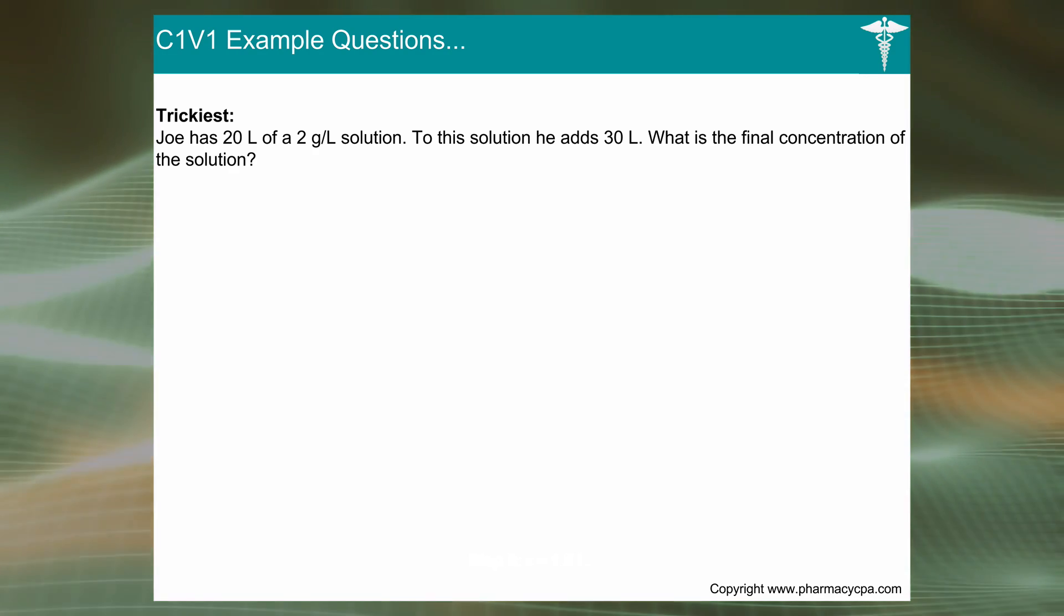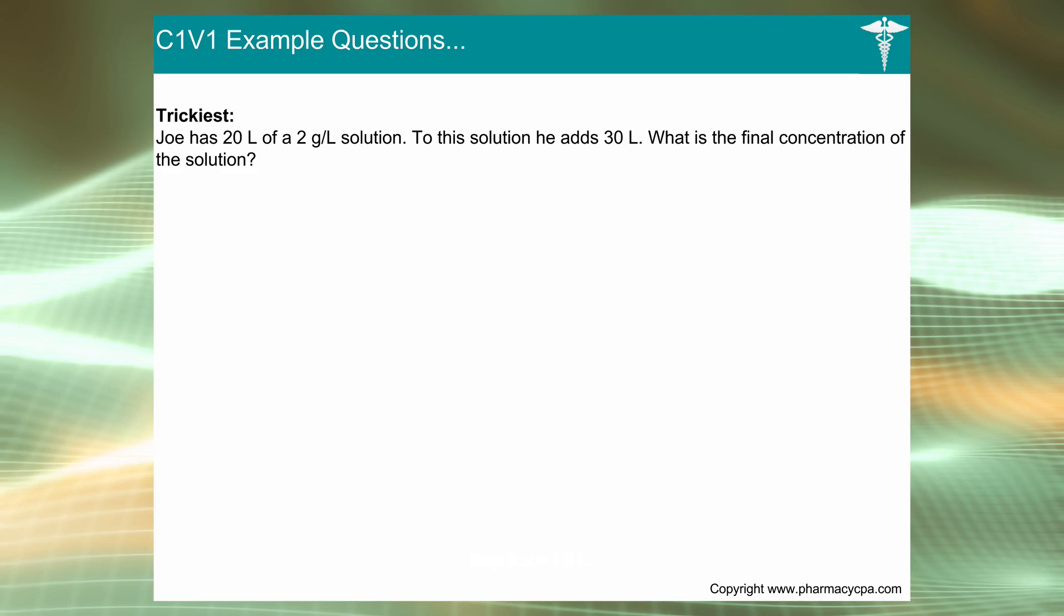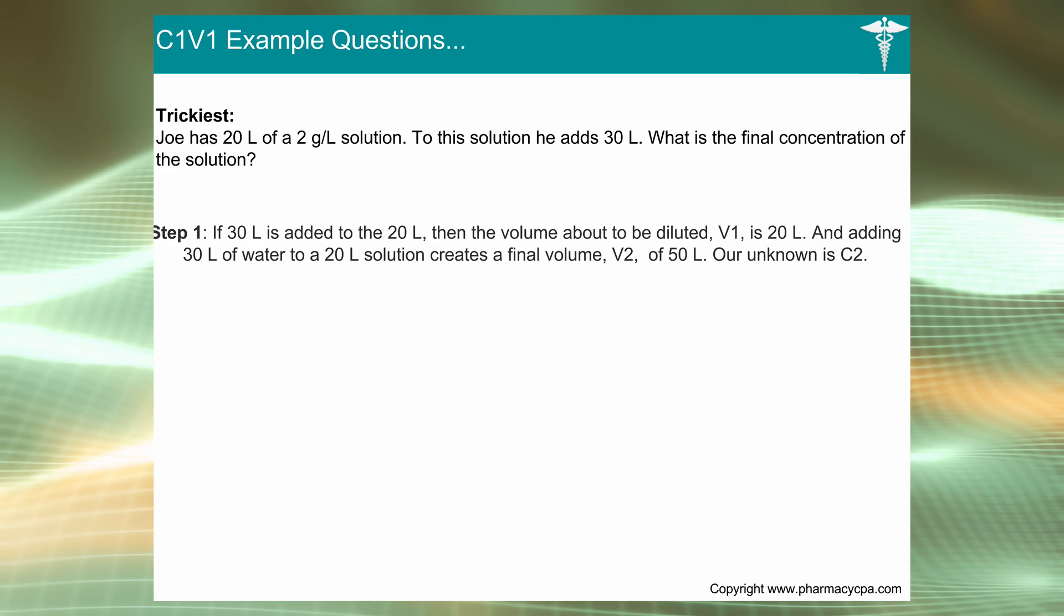Joe has 20 liters of 2 grams per liter solution, so he's got 40 grams in solution. It's very dilute. To this solution he added 30 liters, so he's going to end up with 50 liters. What is the final concentration of the solution? You've got the resulting volume, which is 50 liters, and the C2 is the unknown. Rearrange the equation and you get 0.8 grams per liter.